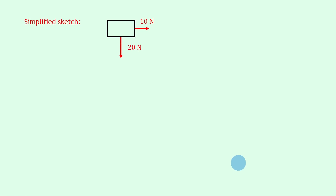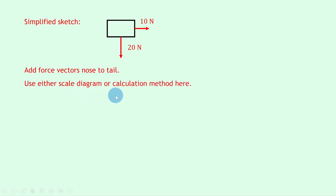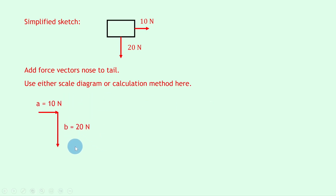So on our simplified sketch we've got 10 newtons to the right and 20 newtons downwards. Just like in question three, we now want to add these vectors nose to tail. We're going to use the calculation method. We've got 10 newtons to the right — labeled A — and the 20 newton vector downwards — labeled B — joined nose to tail. The resultant vector goes from start to finish point with a double arrow, labeled side C, the unknown, with a right angle and angle theta at the starting point.